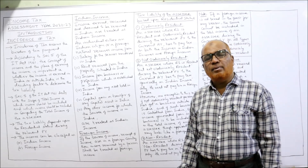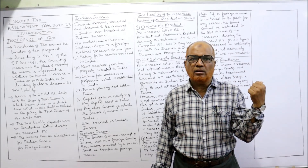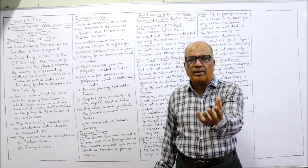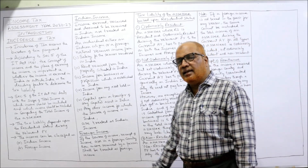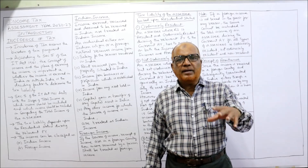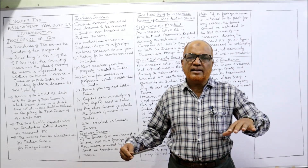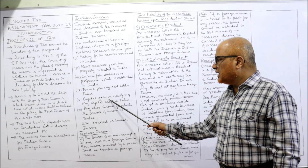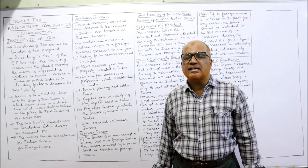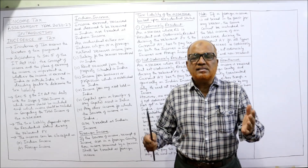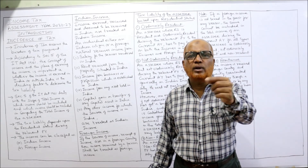Thirdly, income from business or profession established in India. Any income from business or profession set up in India is Indian income. Fourth, income from any asset held in India — apart from house property. Whether the asset is owned by an Indian national or a foreign national, the income earned from that asset is Indian income. Fifth, capital gain on transfer of any capital asset in India — if any gain arises on sale of a capital asset situated in India, that is also taxable in India as Indian income, whether sold by an Indian national or a foreign national.